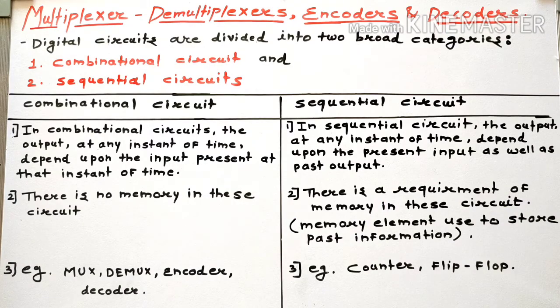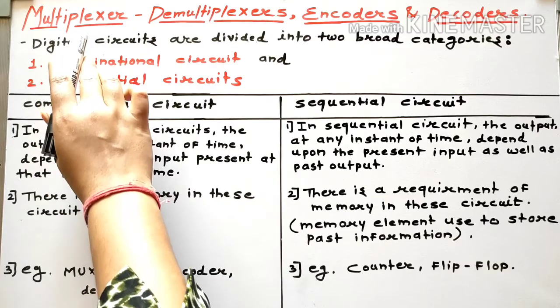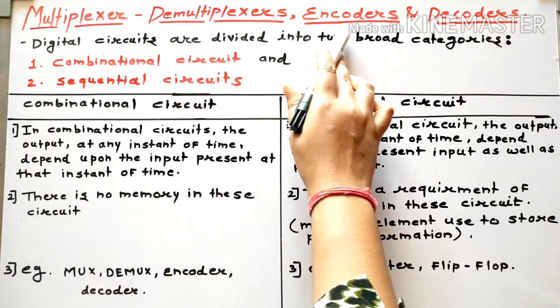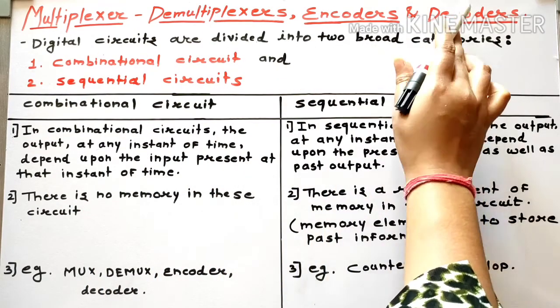Hello students, welcome back to my channel. Today we are going to discuss the new chapter from Paper 2, Digital Electronics, Chapter Number 4 — multiplexer, demultiplexer, encoder, and decoder.